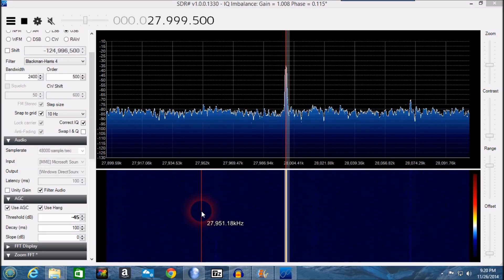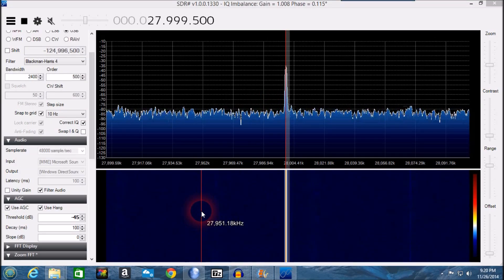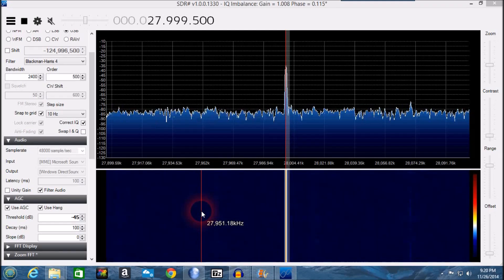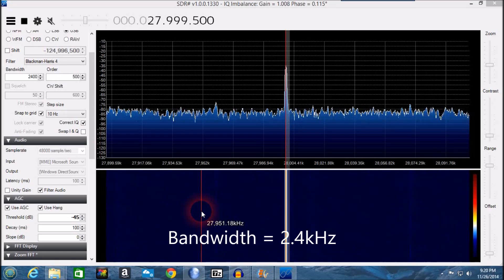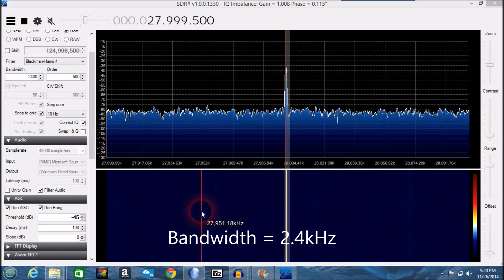The signal generator has been set to 28 megahertz. The output level 50 microvolts or minus 73 dBm. All measurements are being taken in the USB mode with 2.4 kilohertz bandwidth.